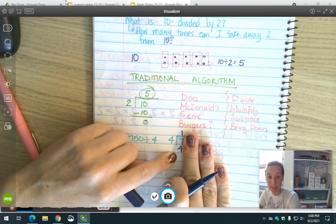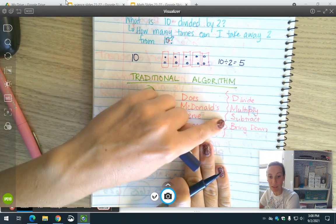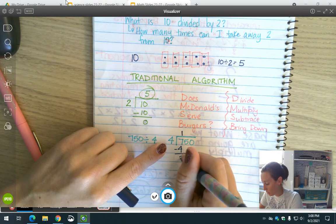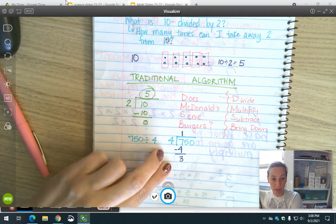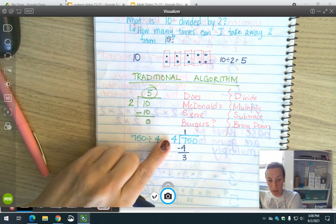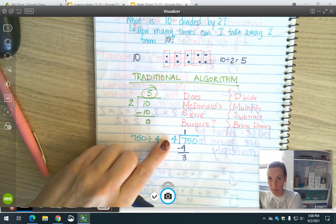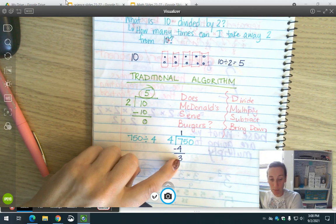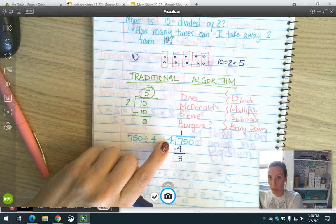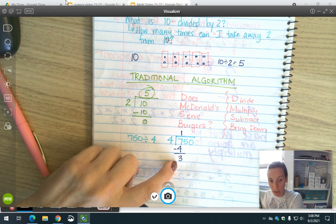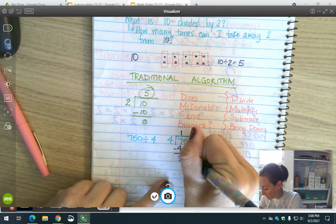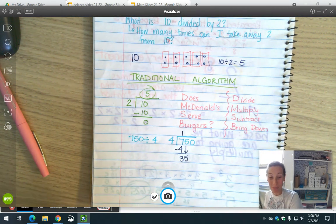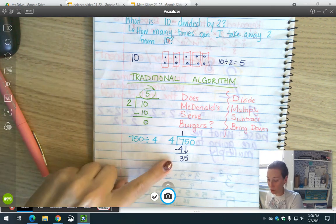Now M, I multiply. 1 times 4 is 4, and I write it directly under 7 because that's the number I'm doing. S for subtract. 7 minus 4 is 3. This is a great checkpoint. If I end up with a number right here that's bigger than 4, I did something wrong because that means I could have gotten another group in. But it's smaller, so we're good. B for bring down, I bring down the next number.